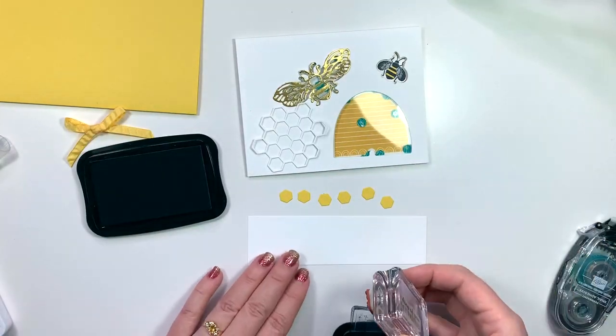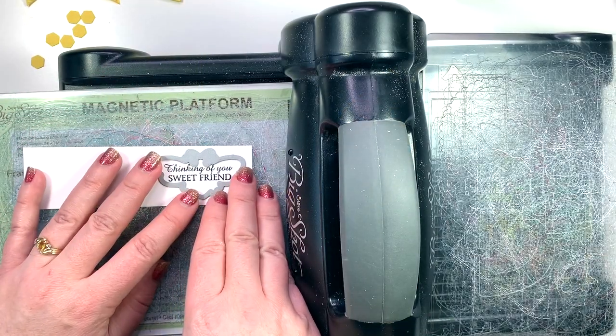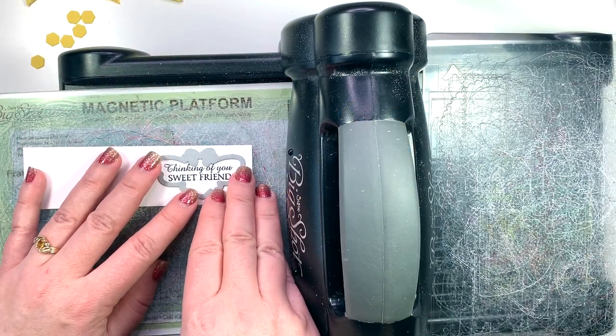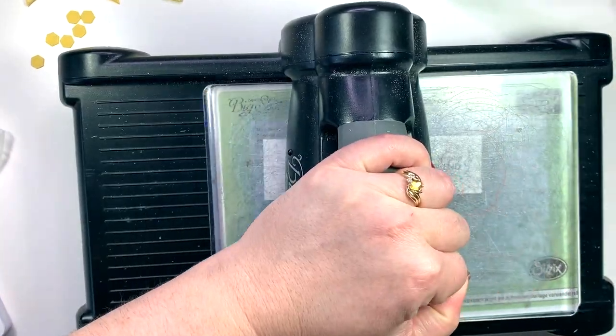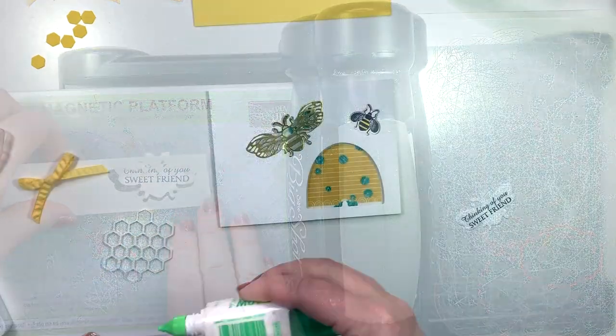I'm going to stamp my sentiment thinking of you sweet friend with my memento ink and I'm going to cut it out with the largest bee die. I find that this sentiment fits perfectly inside the wings of this little die.